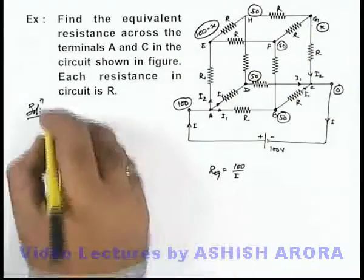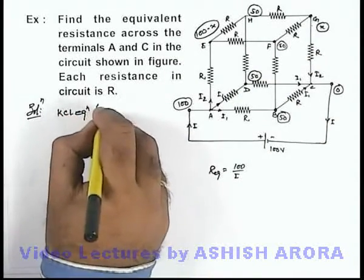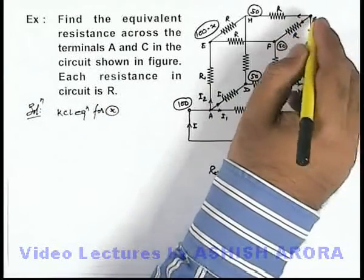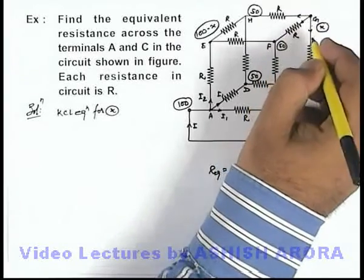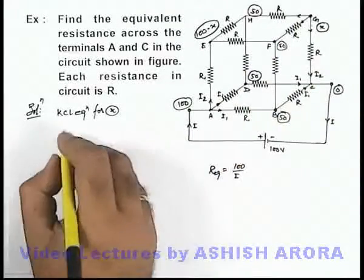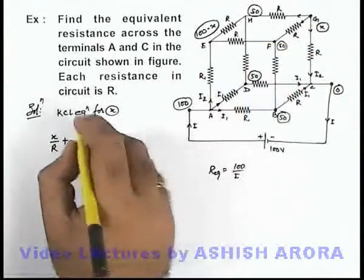So just to calculate the value of x, we write KCL equation for x. And here you can sum the 3 currents, outgoing currents from the junction where potential is x and equate to zero. The current going in this direction will be x by R, plus current going in this direction will be x minus 50 by R.